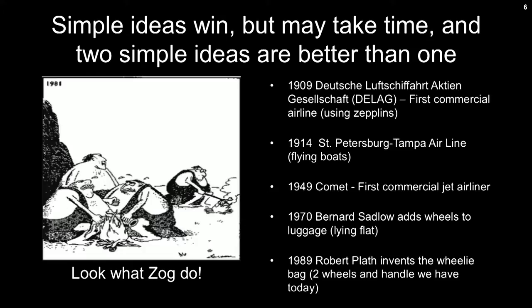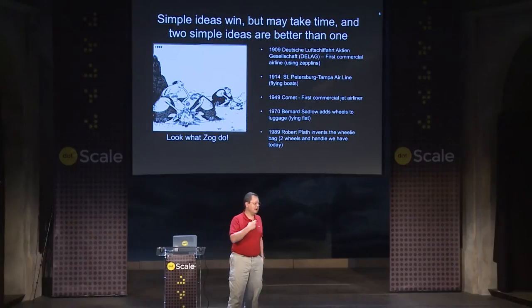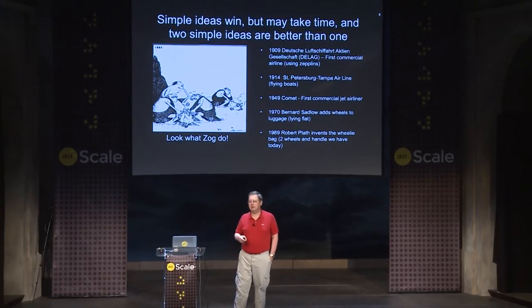Here's my favorite example of a simple idea: the cavemen have invented fire — one great simple idea; you can cook food, life is really good. And then there's Zogg on the right, who invented the spit — his meat on a stick rather than held in his hand. Simple ideas like this I think are still out there. We could probably come up with innovations in the way we do naming that are very basic.